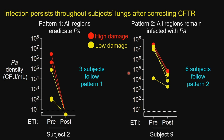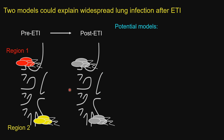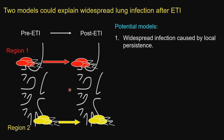In the first subject shown, all five lung regions cleared Pseudomonas — this patient eradicated their infection — and three of our nine subjects followed this pattern. In contrast, the remaining six subjects followed a second pattern where all five lung regions were positive before and after ETI. In these six subjects, both high and low damage regions remained infected. Importantly, the low damage regions in these subjects had a very similar degree of damage as the regions that eradicated Pseudomonas.